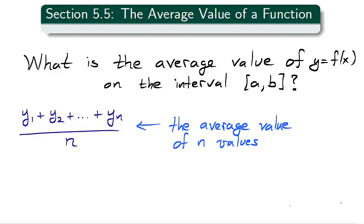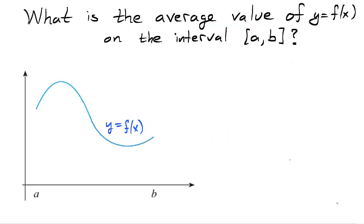The average value of a finite number of values y1 through yn is their sum divided by n. For a function f, we can divide the interval ab into n subintervals of width delta x, which equals b minus a over n.